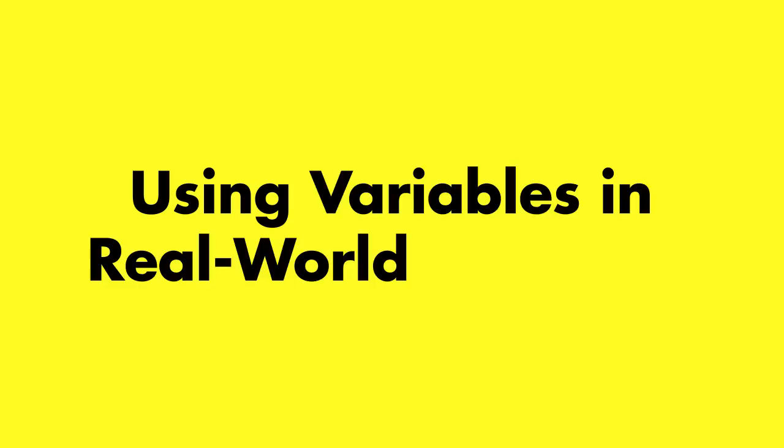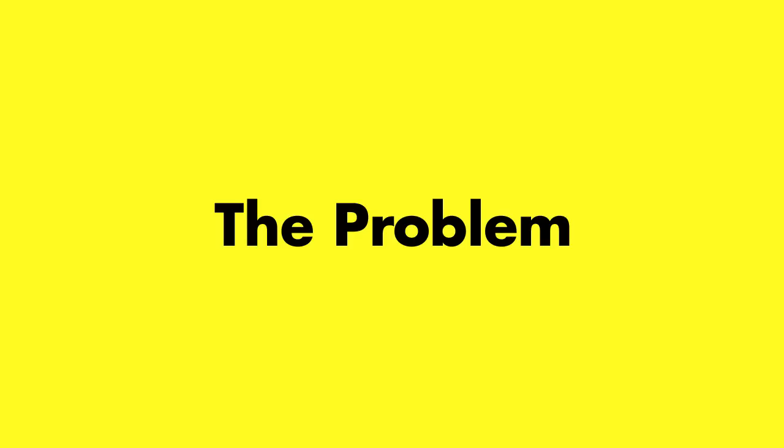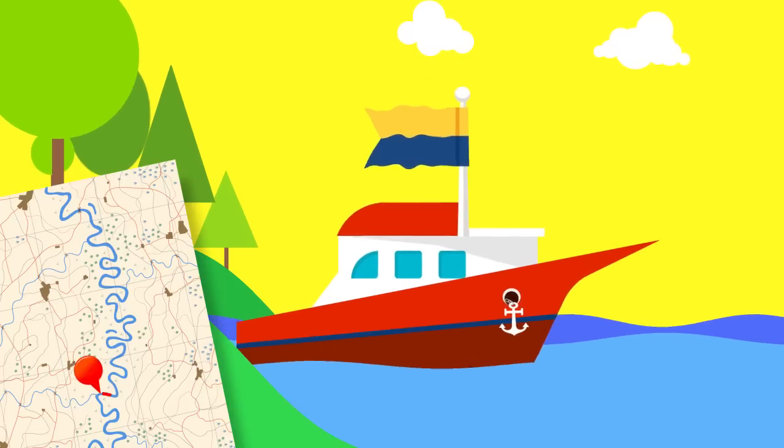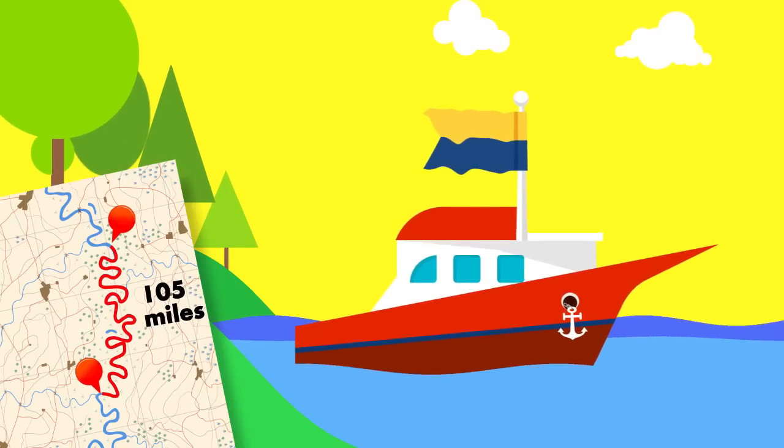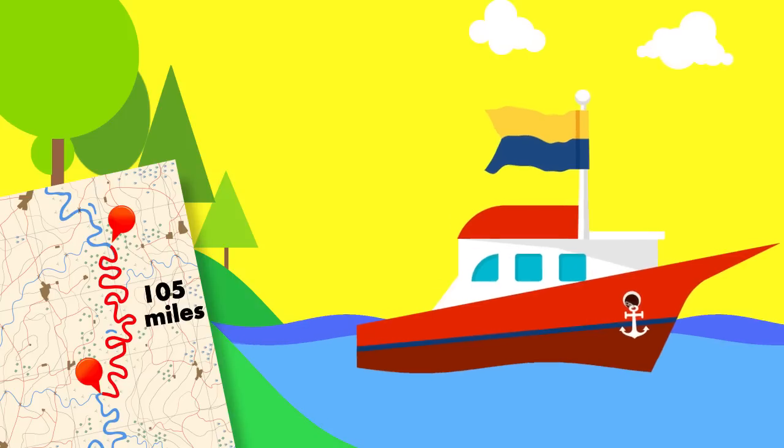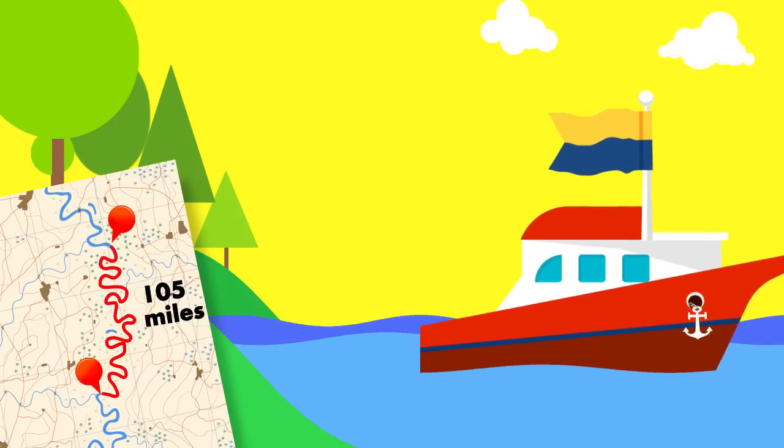Using Variables in Real-World Problems. A boat has to travel 105 miles downstream. Based on how quickly it travels, how long will it take the boat to arrive?